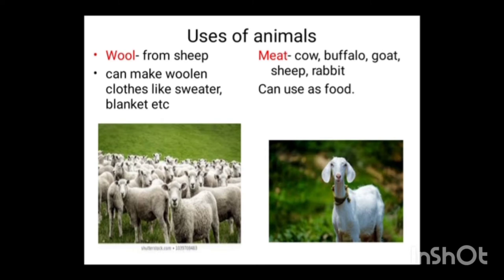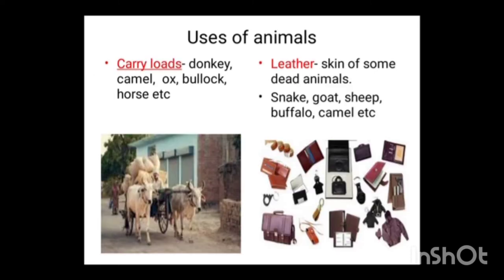Some animals we use as food — it is meat. For example, cow, buffalo, goat, sheep, rabbit, etc. Now some animals are used for carrying loads — that is donkey, camel, ox, bullock, horse, etc.